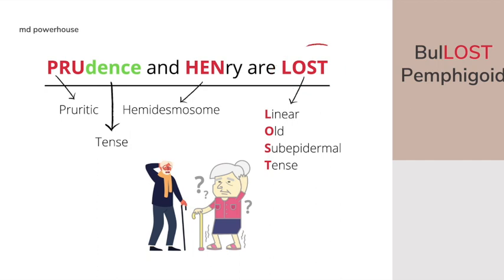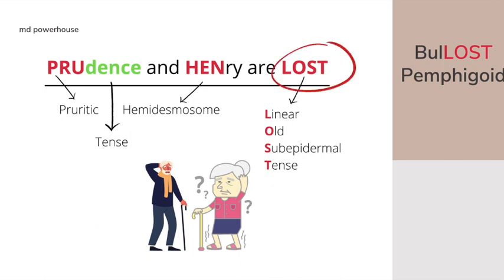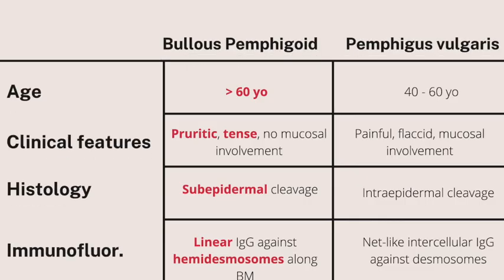Pause the video and say it out loud: Prudence and Henry are lost. Prudence and Henry sounds like hemi — hemidesmosomes. Linear, old, sub-epidermal, and tense. Now that you know that Prudence and Henry are lost, you can easily remember everything that was previously highlighted. Go through what exactly it means and what it stands for.